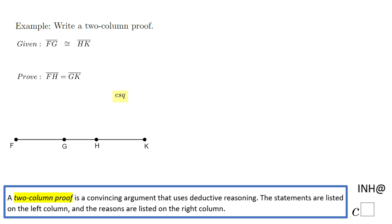I'm going to write a two-column proof first and then a flowchart for this problem, where it's given that segment FG is congruent to segment HK. I marked on my picture this statement, and I need to prove that segment FH is congruent to segment GK.